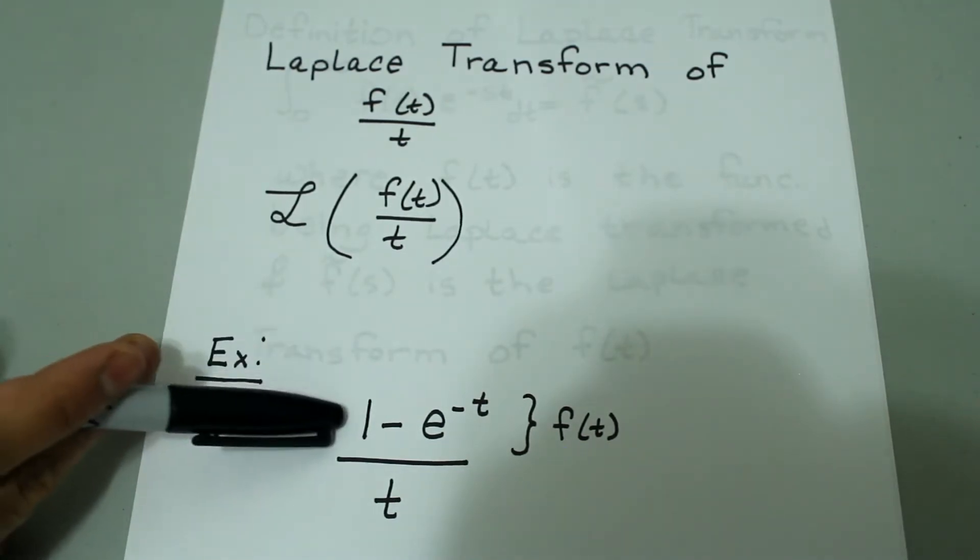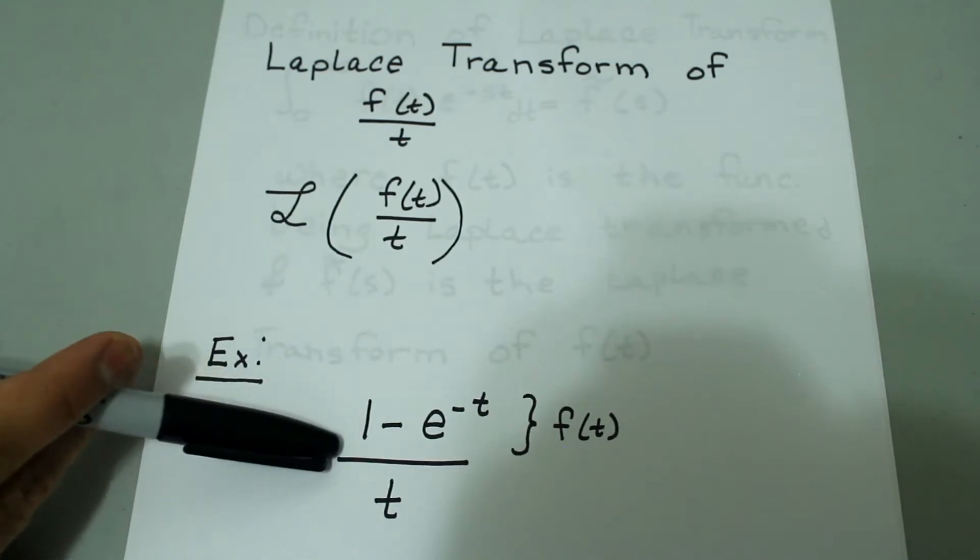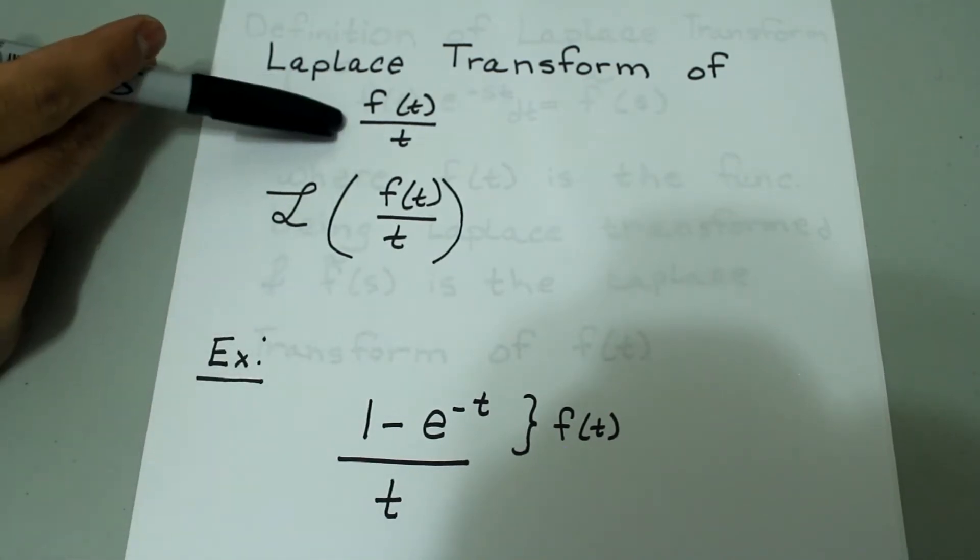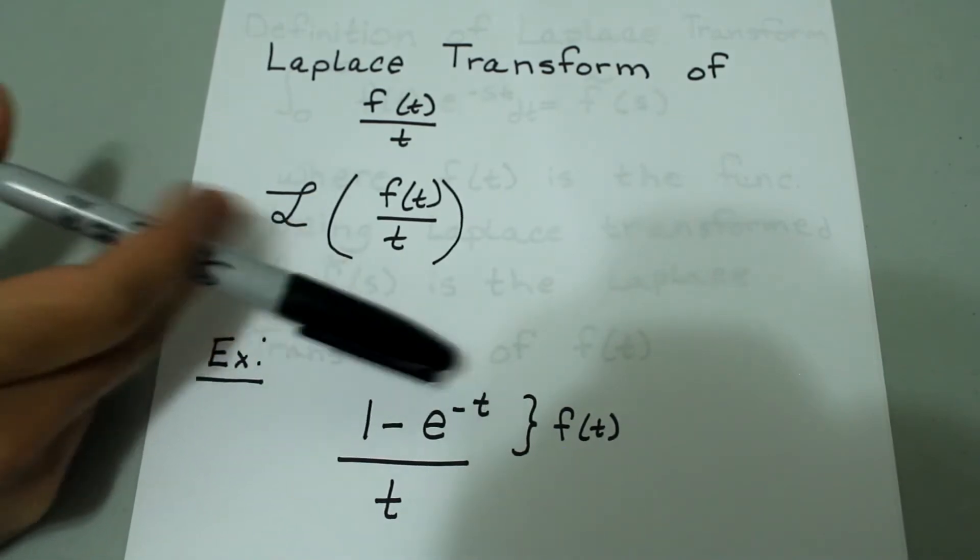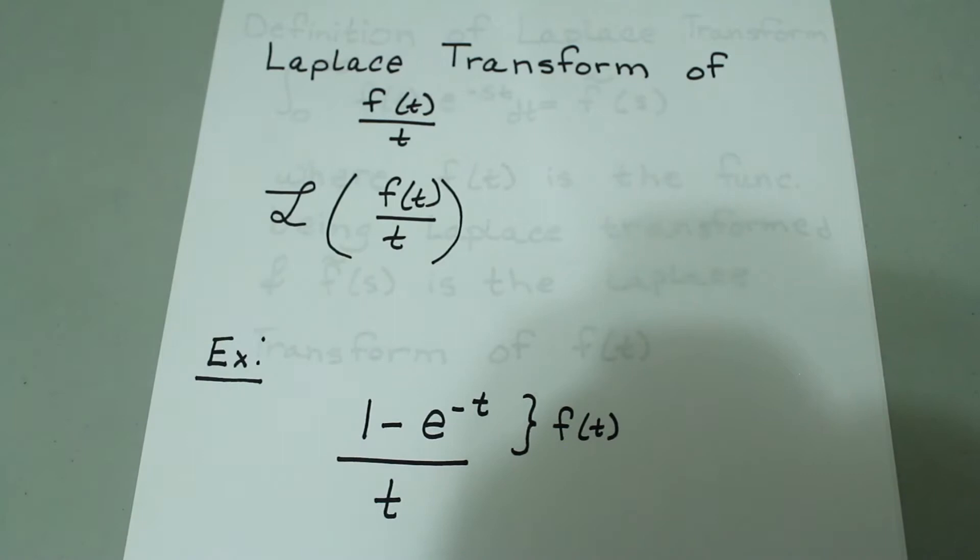If we have 1 minus e to the negative t over t, to put it in this form, we can treat 1 minus e to the negative t as f of t. And the t here can stay as just t.